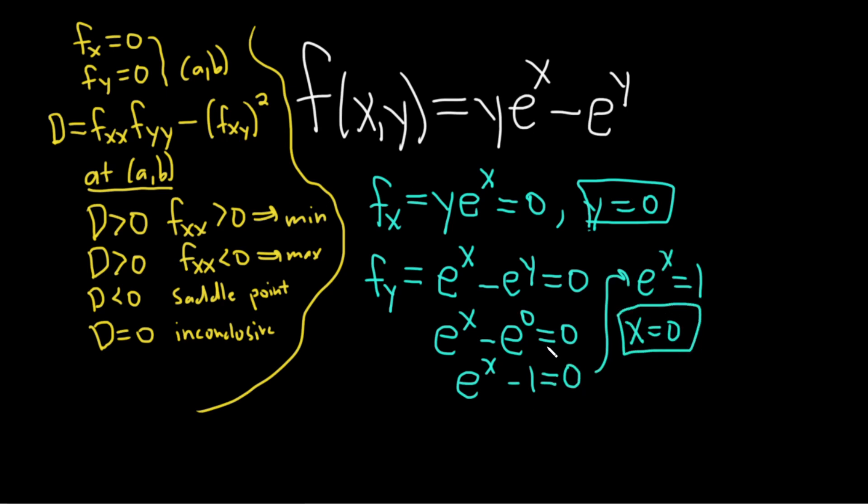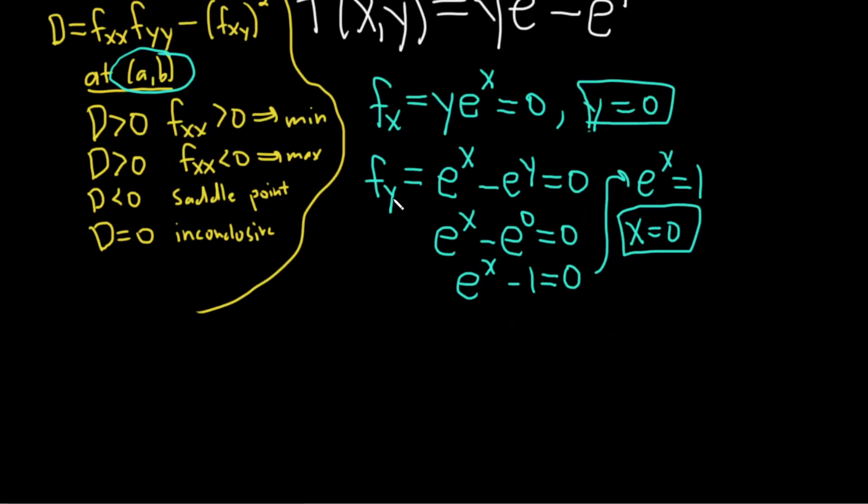So there we have it. We have two values: x equals zero and y equals zero. That's going to be our (a,b) here. I'm going to scroll down. So we have (0,0) as our point that we're going to test with the second derivative test.